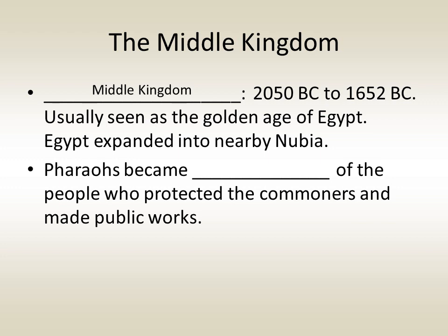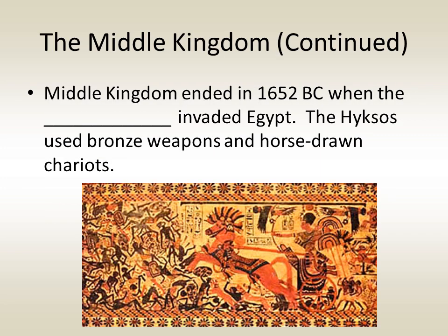The Middle Kingdom lasted from about 2050 BC to 1652 BC and is usually seen as Egypt's Golden Age in culture. During this time, Egypt expanded into nearby Nubia. Pharaohs of the Middle Kingdom were seen as shepherds of the people, protecting commoners and creating public works to benefit them. The Middle Kingdom ended in 1652 BC when a group known as the Hyksos invaded, using bronze weapons and horse-drawn chariots to easily defeat the Egyptians, who were still using stone tools and weapons.